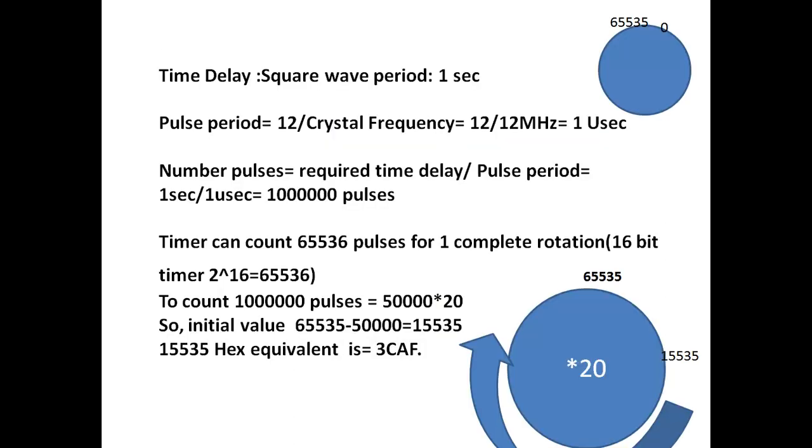Let's see how to generate time delays by using timers. You know that timers are used to generate accurate time delays. How timers are giving accurate time delays? Just by counting pulses.